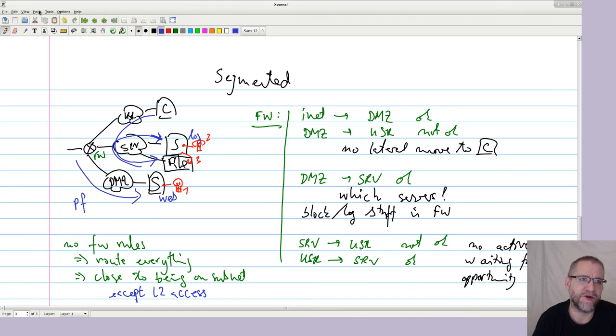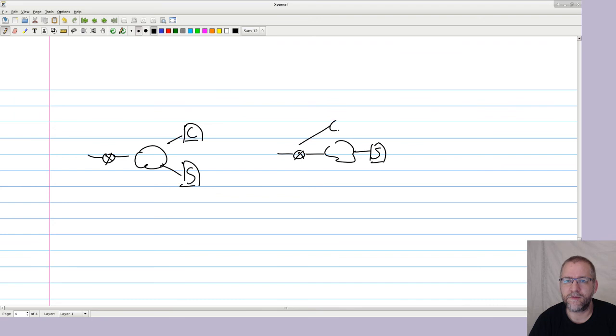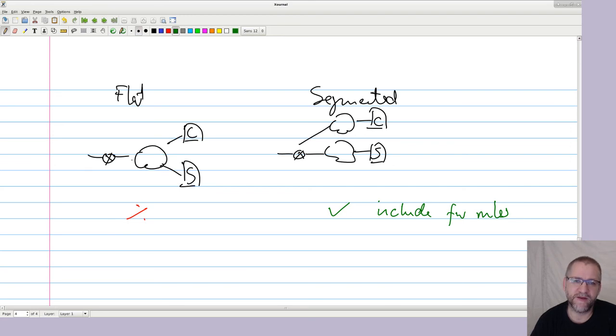So in summary we have the flat network and we have the segmented network. There's not much discussion. Don't do this. Do this and add proper firewall rules. This looks simple but it gives you a lot of layer 2 traffic and will give you a lot of issues in the long run. So this is how we did it back in the old days and we're not doing that anymore.